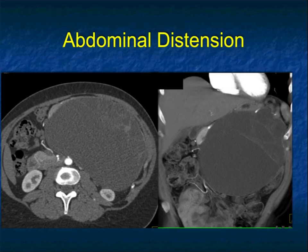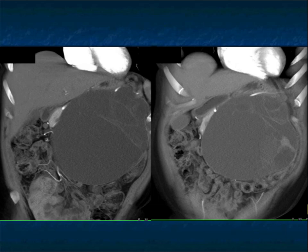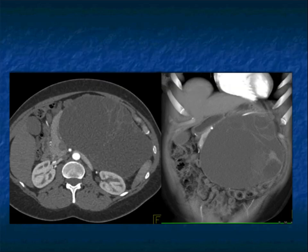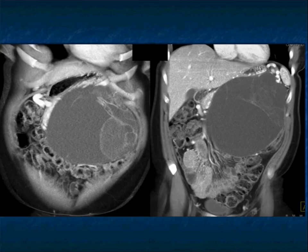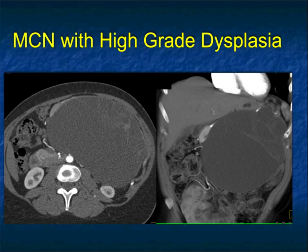Here's another set of images from the venous phase. Another patient with abdominal distension — not a surprise when you have larger tumors, the likelihood of presenting with symptoms is higher. Large septations, big cystic lesion. You could think: could this be a splenic cyst, a retroperitoneal cyst, a mesenteric cyst? But mesenteric cysts are well-defined, you usually see the entire pancreatic gland, there's displacement, and typically no septations. So this was a mucinous cystic neoplasm — a really nice example. Some solid components push you to worrying about high-grade dysplasia, which indeed it was.